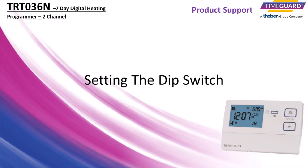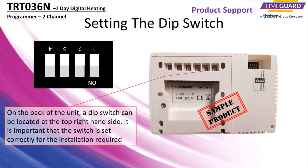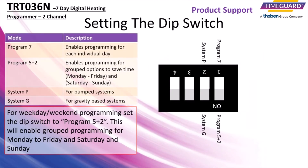DIP switch settings. On the back of the unit, a DIP switch can be located at the top right-hand side. It is important that the switch is set correctly for the installation required. For weekday and weekend programming, set the DIP switch to program 5 plus 2.